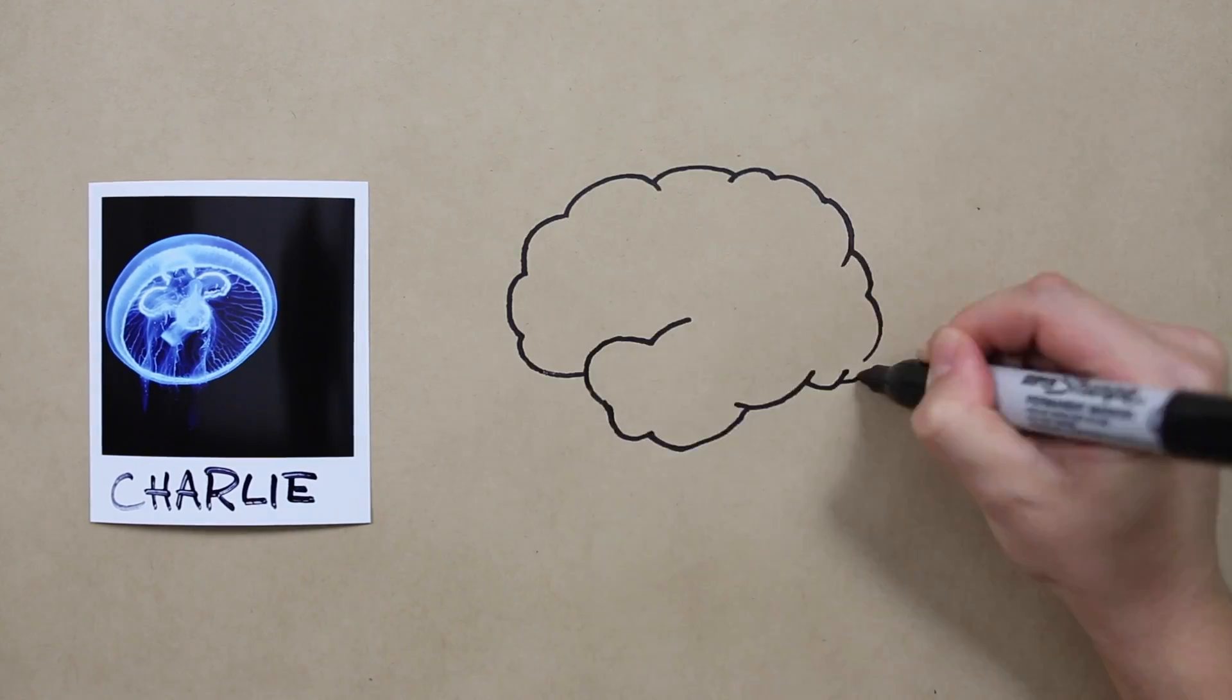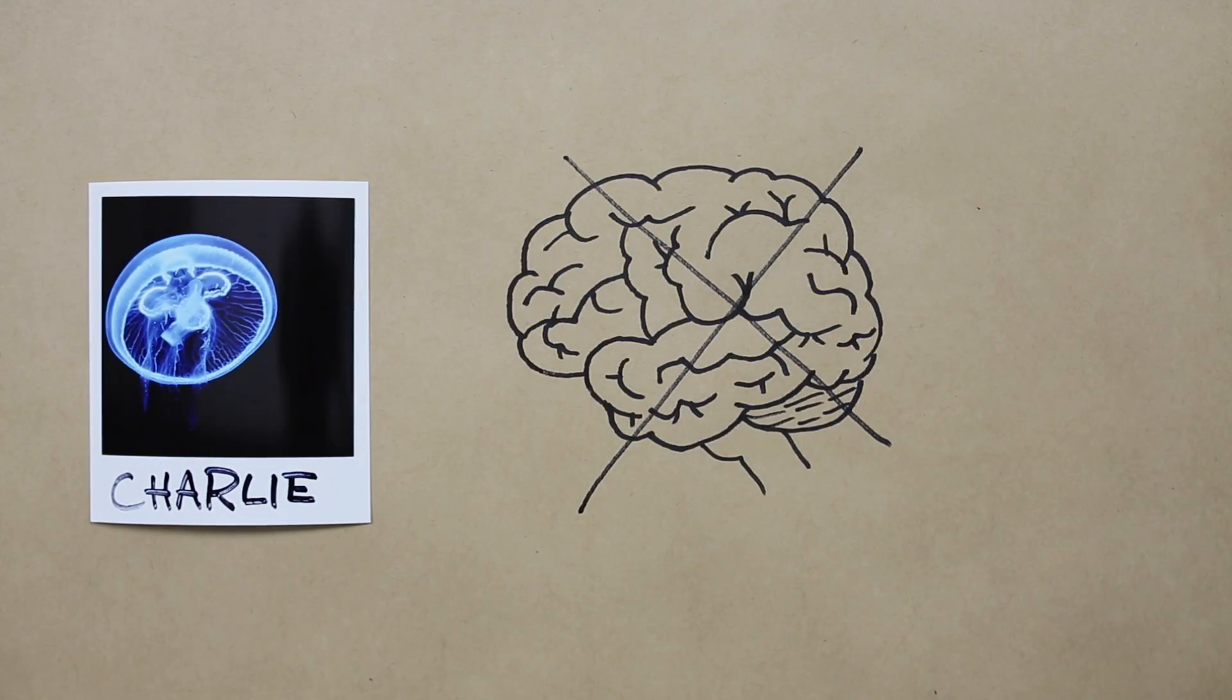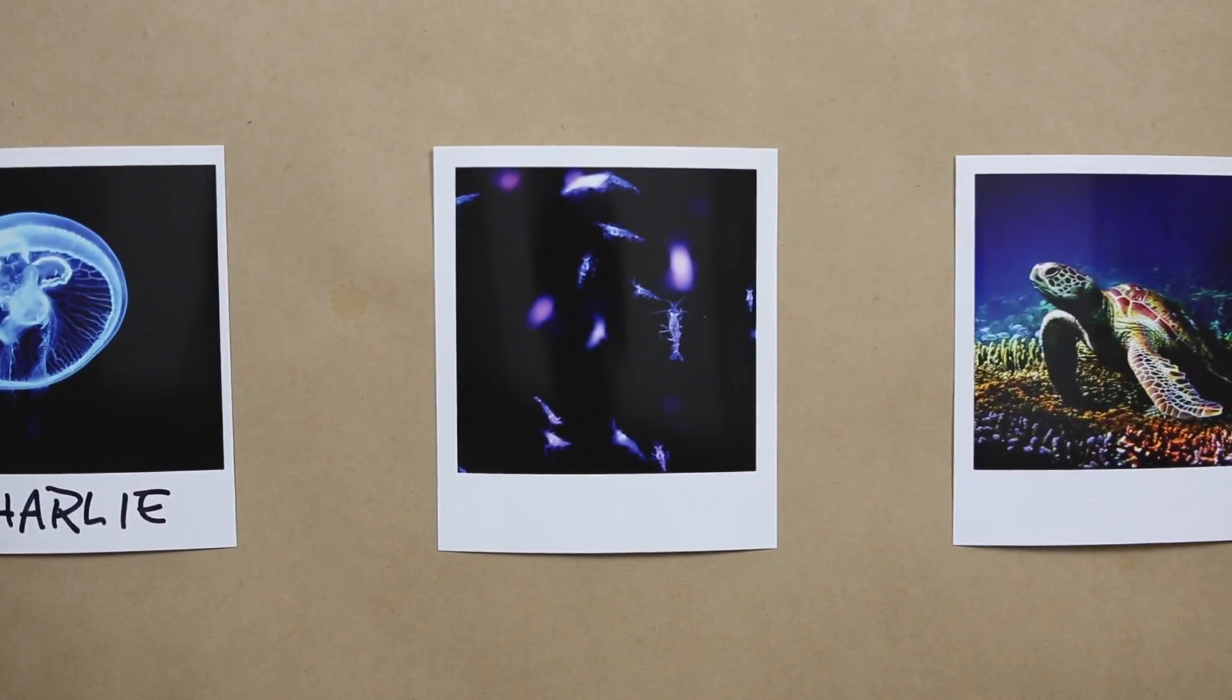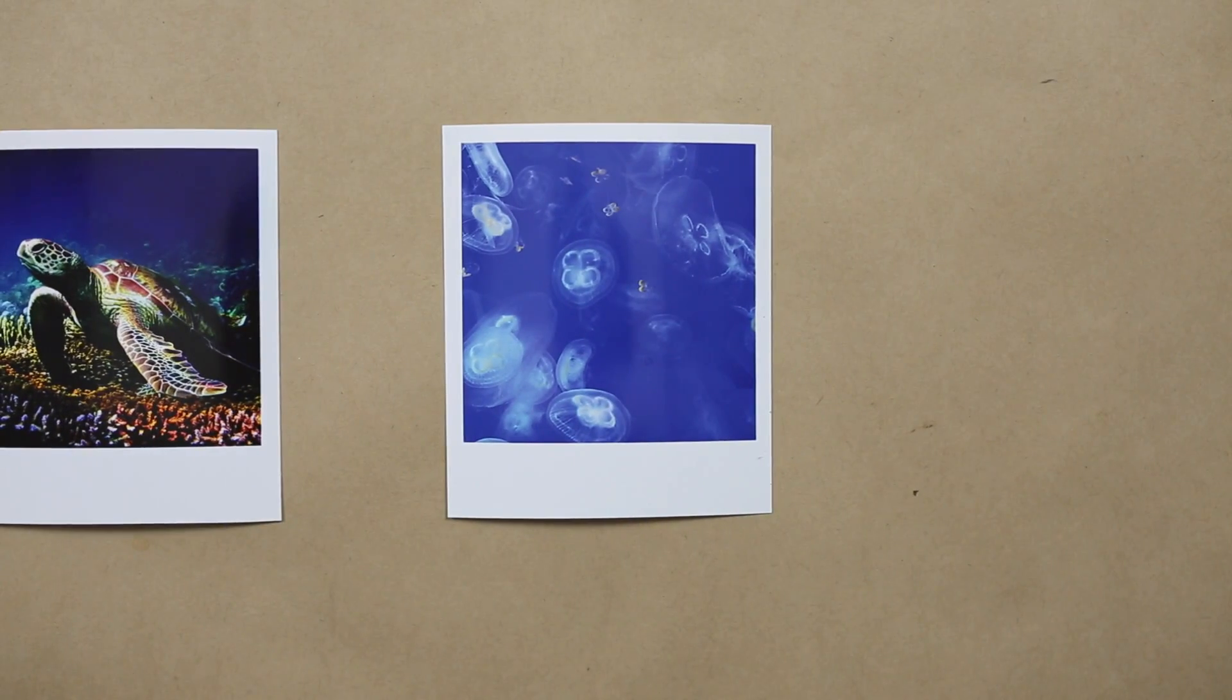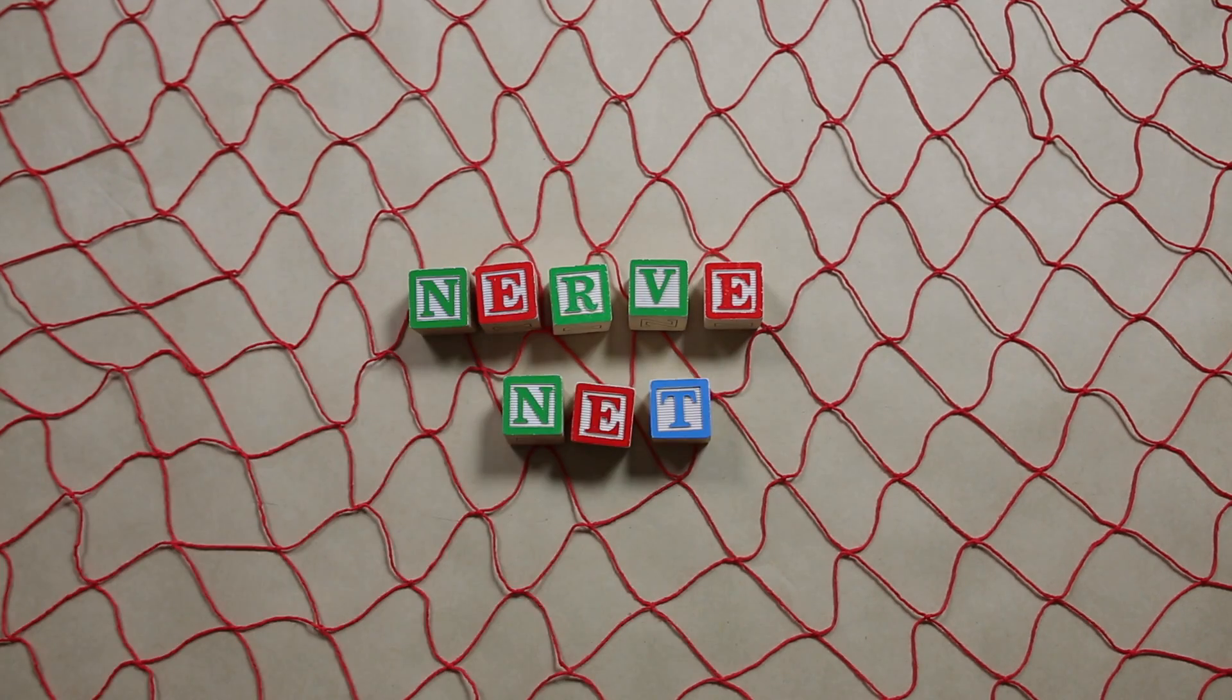Charlie doesn't have a brain, or at least not in the traditional sense. And yet he can swim around, eat stuff, avoid predators, and even make little baby moon jellies. All because he has something called a nerve net.